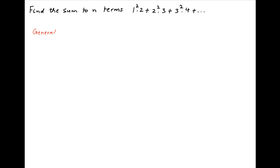Let's denote the general term or the r-th term of the given series by u_r. The u_r is the product of two components. The first component is the general term of the series 1², 2², 3², and so on, so the r-th term is r². The second component is the general term of the series 2, 3, 4, and so on, so the r-th term is r+1. Therefore, u_r is equal to r² times (r+1).